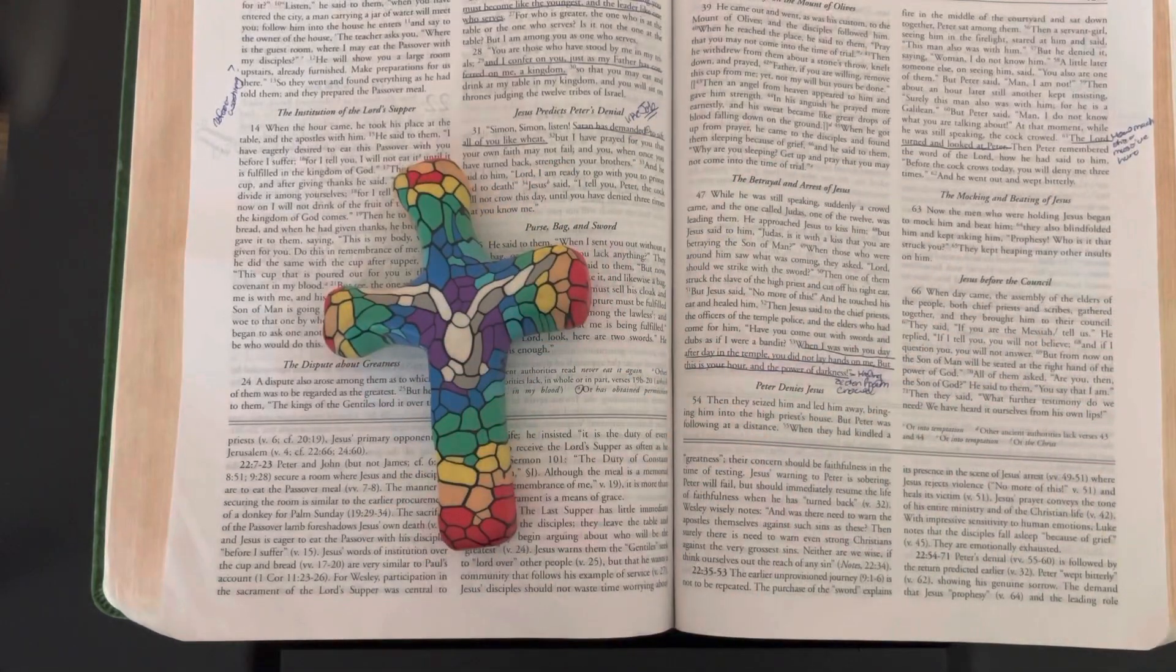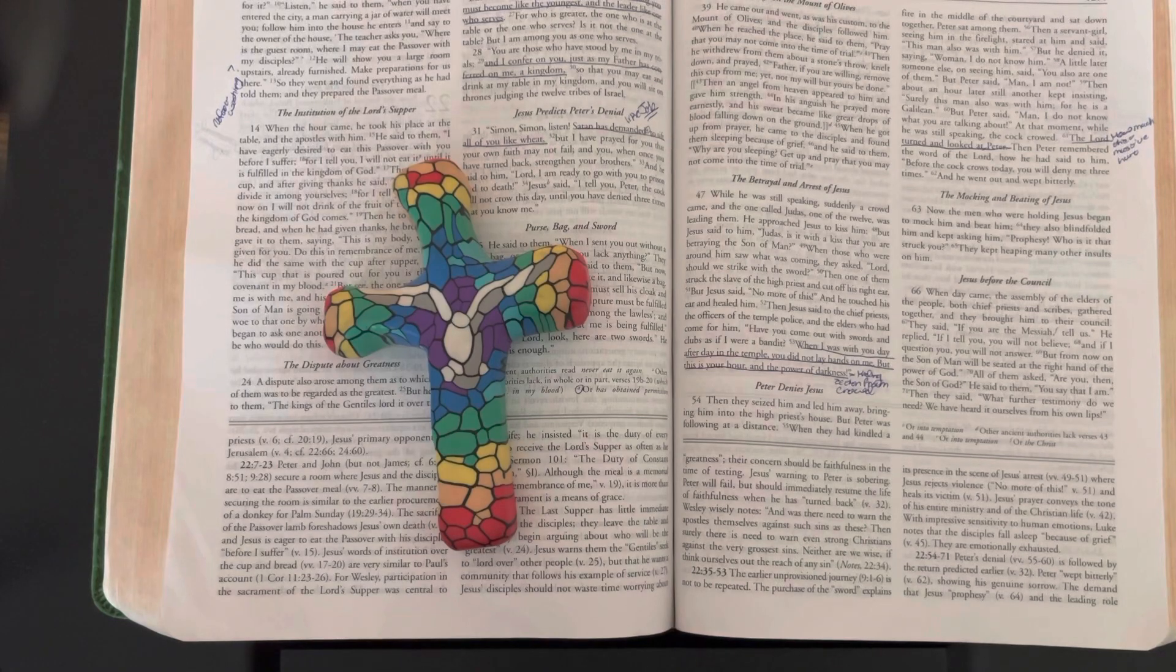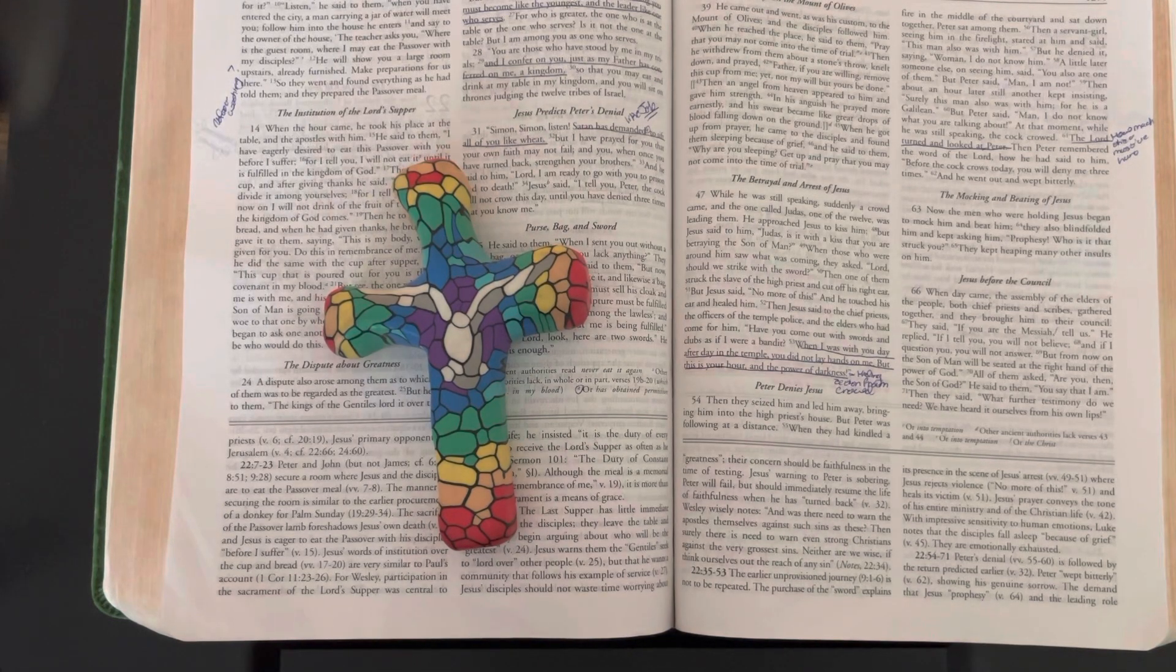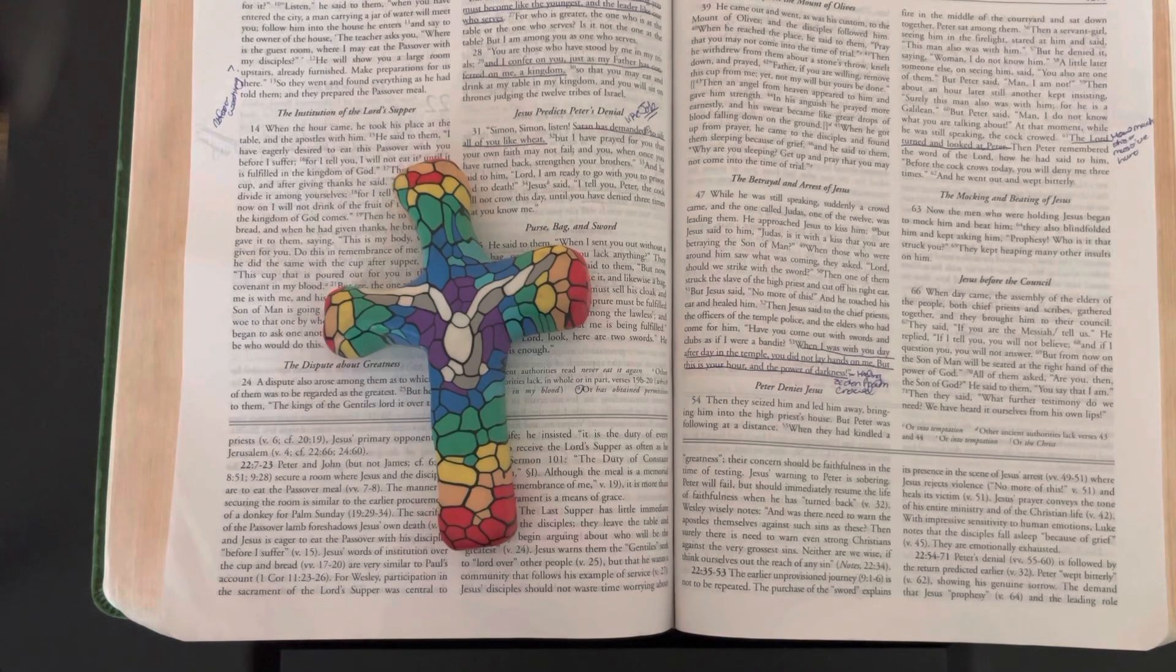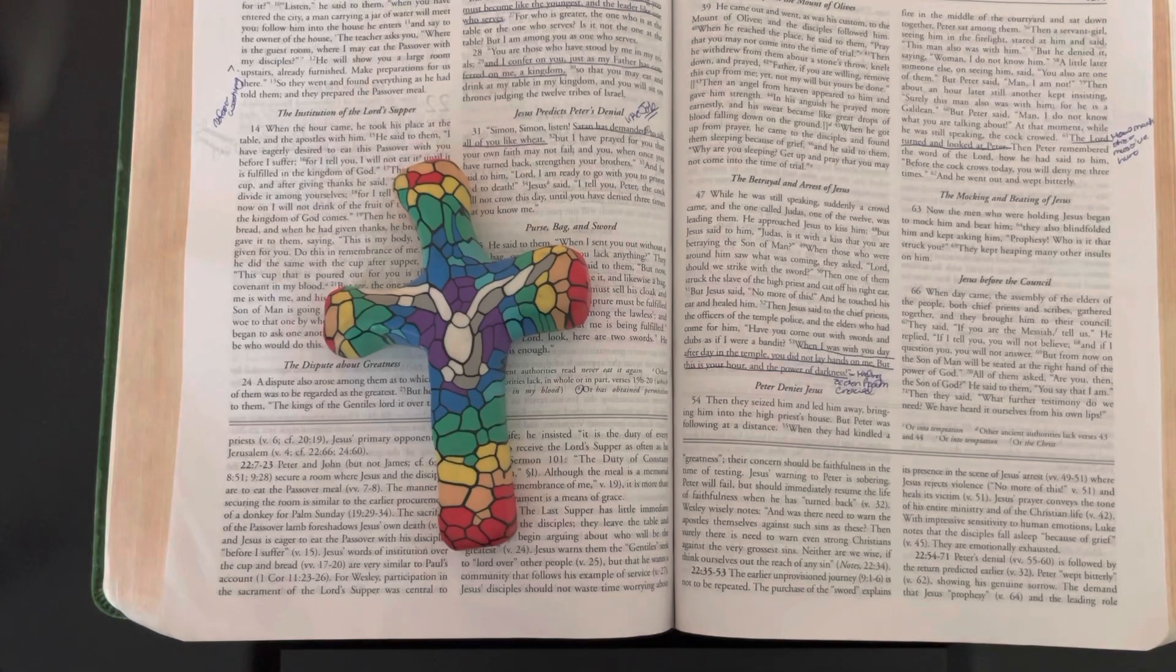He came out and went as was his custom to the Mount of Olives, and the disciples followed him. When he reached the place, he said to them, "Pray that you may not come into the time of trial." Then he withdrew from them about a stone's throw, knelt down and prayed, "Father, if you are willing, remove this cup from me. Yet not my will but yours be done."